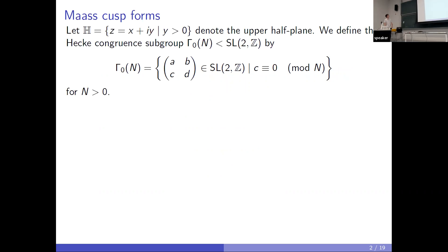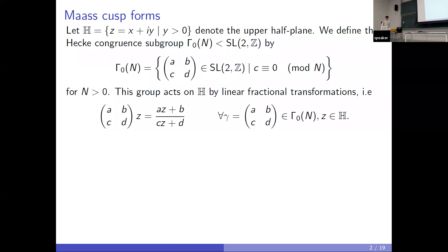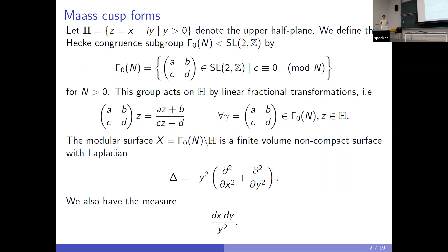Let H be the upper half plane, complex numbers with imaginary part greater than zero. We define the Hecke congruent subgroup gamma n to be the subgroup of SL2Z, where essentially this bottom left entry of the matrix is congruent to zero mod n. This group acts on the upper half plane by fractional linear transformations. We have this modular surface with a Laplacian attached to the surface and this measure.